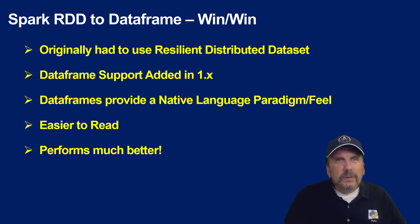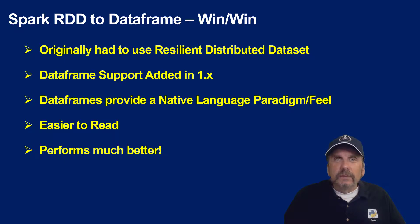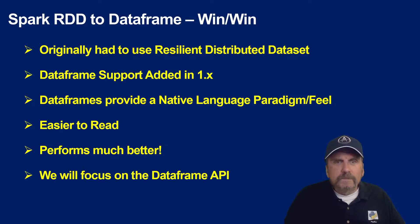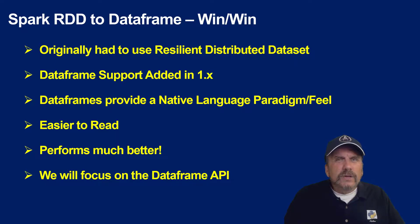Ironically, even though data frames are more powerful and easier to use, they also perform much better. That's because Spark has something called the Catalyst Optimizer, which takes what you're trying to do, analyzes it, and finds the most efficient way to solve the problem — basically the query plan. We're going to focus on the DataFrame API through most of this series, because that's really where things are right now. However, there are still some cases with unstructured or semi-structured data where you may want to go back to using RDDs. It's also good to understand how RDDs work so it's not a black box to you.